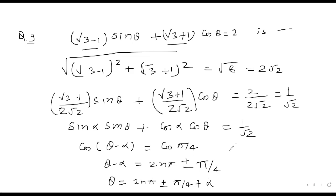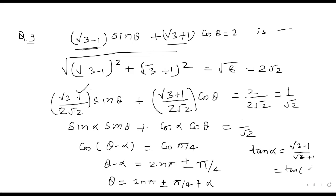We determine α by dividing the two terms: tan α = (√3 − 1)/(√3 + 1), which equals tan(π/3 − π/4) using the tan subtraction formula. So α = π/3 − π/4 = π/12. Substituting α = π/12 gives the final general solution.